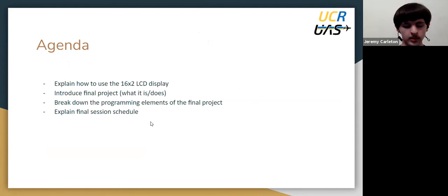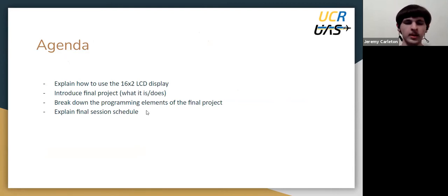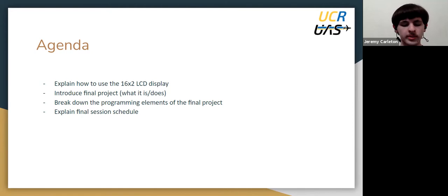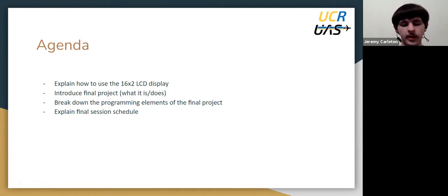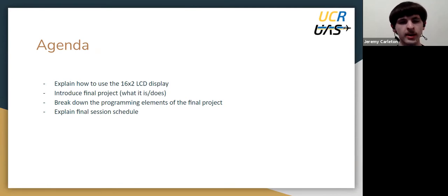Now let's go over the agenda for this session. What we'll be doing is first introducing the 16 by 2 LCD display, which is the last electronic component we will be covering in this workshop series. Then we'll be introducing the final project, which will involve a range of topics from previous sessions as well as the LCD display. I'll break down the programming elements of the project, and at the end I'll explain the schedule for Session 5, the one right after this one.